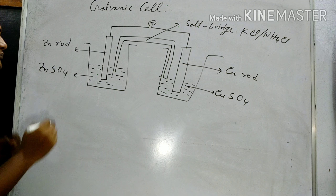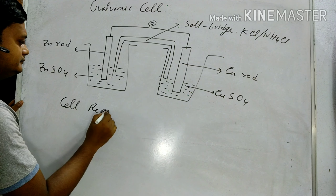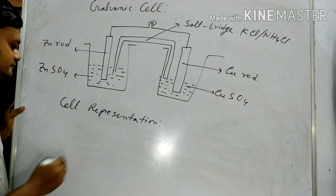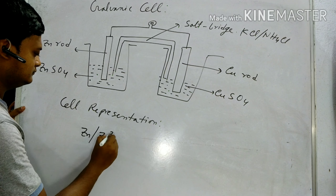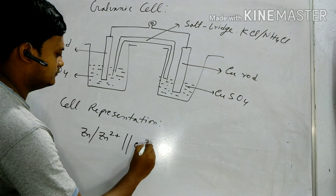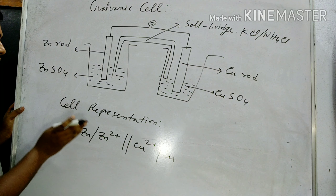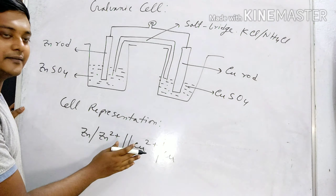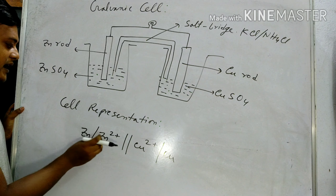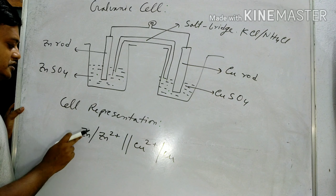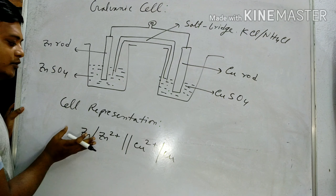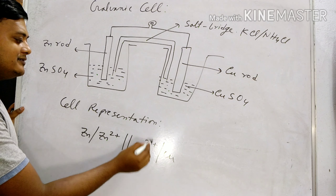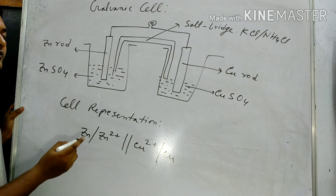Next, cell representation — how we can represent a Galvanic Cell. We place the anode always on the left-hand side and the cathode on the right-hand side. The metal is always on the outside and the ion inside. So: Zn / Zn²⁺ indicates the anode, the double parallel line indicates the salt bridge, then Cu²⁺ / Cu — that is the representation of a Galvanic Cell.